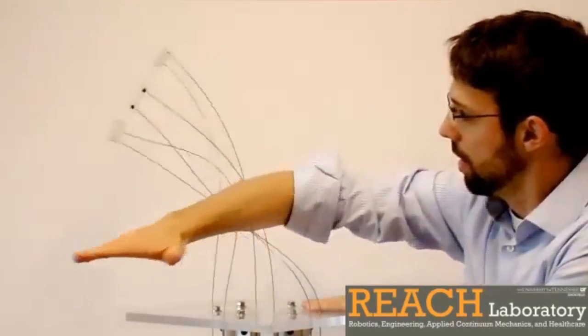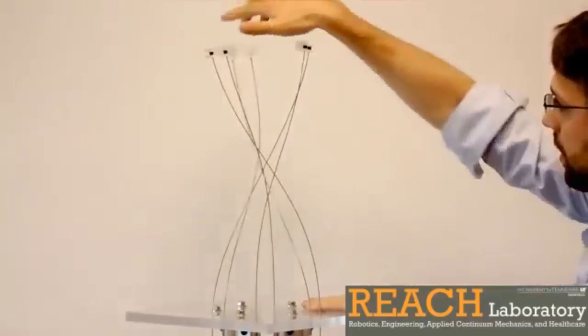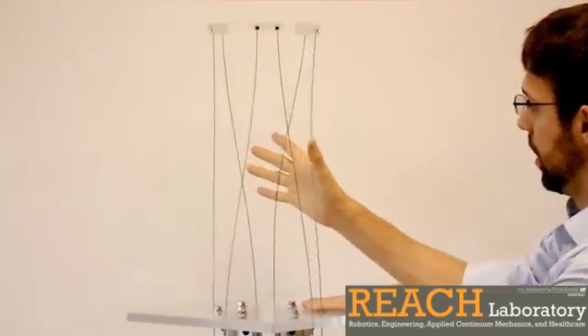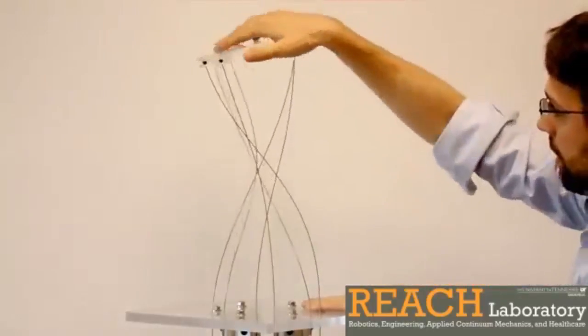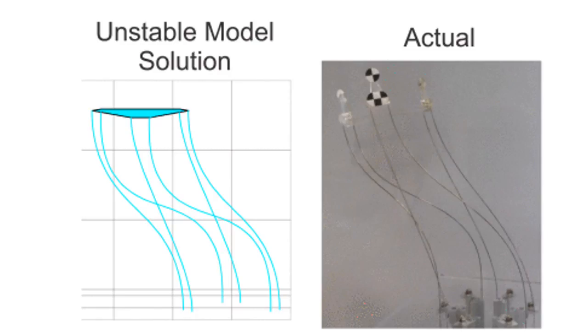Numerically computed solutions of static continuum robot models typically satisfy the first-order conditions necessary for equilibrium, but do not provide any information about the elastic stability of the solution. The inability to detect or avoid physically unstable model solutions poses a major hindrance to reliable model-based simulation, planning, design, and control.